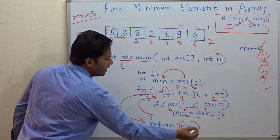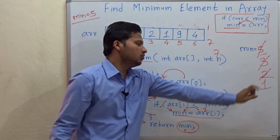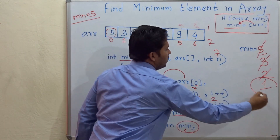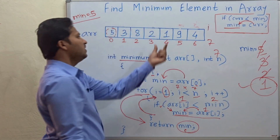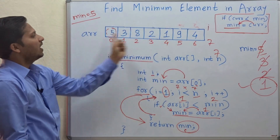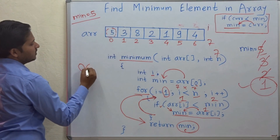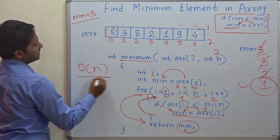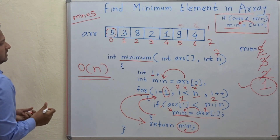We return the minimum value — this minimum variable value. 1 is the minimum element in this array. This is how we find out the minimum in O(n) time complexity in the worst case.